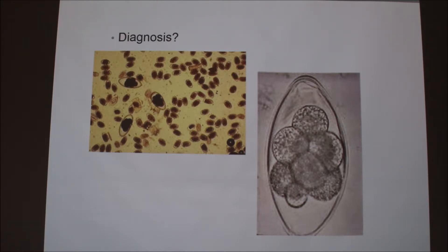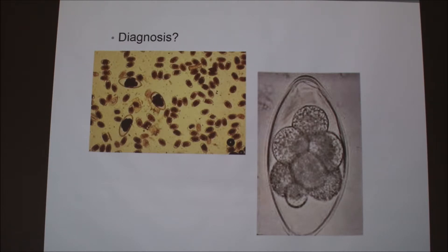For large livestock animals, fecal collection is typically done as a grab sample — putting a glove on and collecting directly. That's how fecals are collected, which is usually pretty different from how it's done with companion animals.